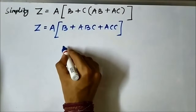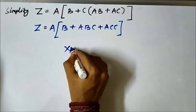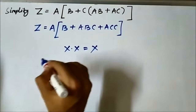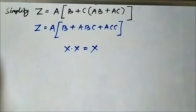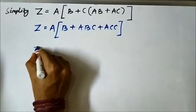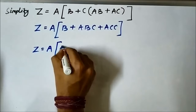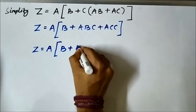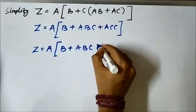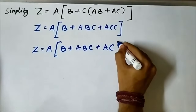We know that as per the Boolean AND rule, two same Boolean variables when ANDed together give us the same Boolean variable. So here c·c will simply be c. We can write it as a·b plus a·b·c plus a·c.